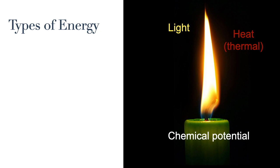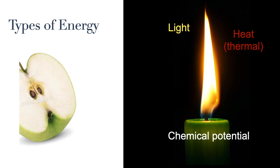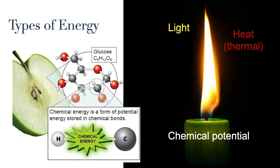The chemical bonds in the wax molecules contain energy, and it is that energy that is transformed and released as heat and light as the candle burns. In a similar way, this apple is full of chemical potential energy stored in the chemical bonds in the sugar that makes up the apple. When we eat the apple, we can transform that energy into other forms. And this concept of energy changing forms brings us to the laws of thermodynamics.